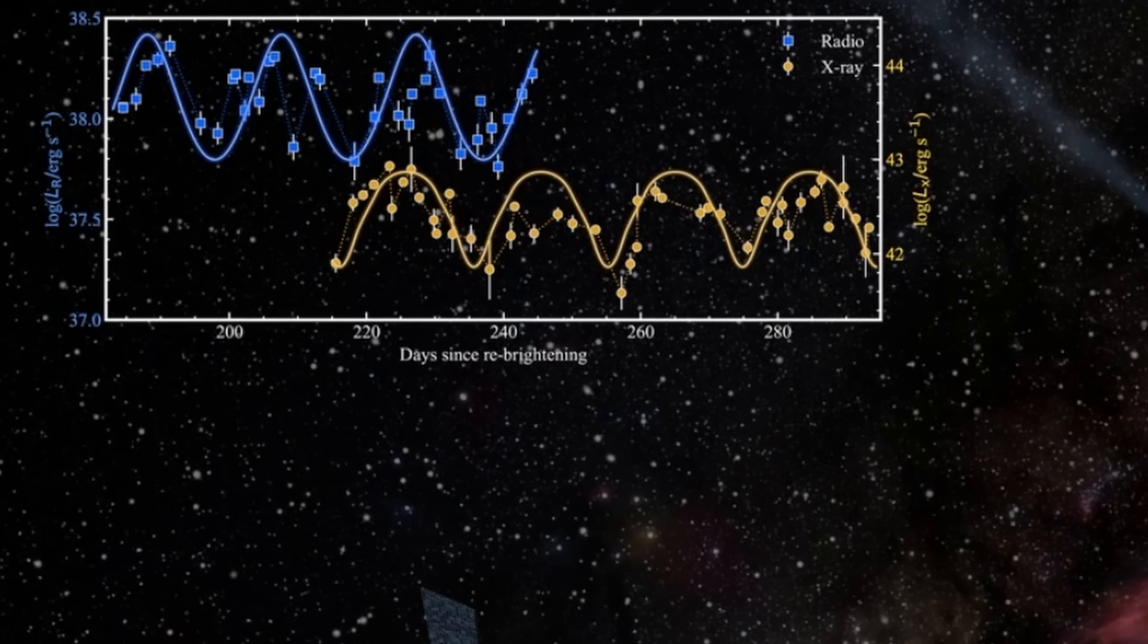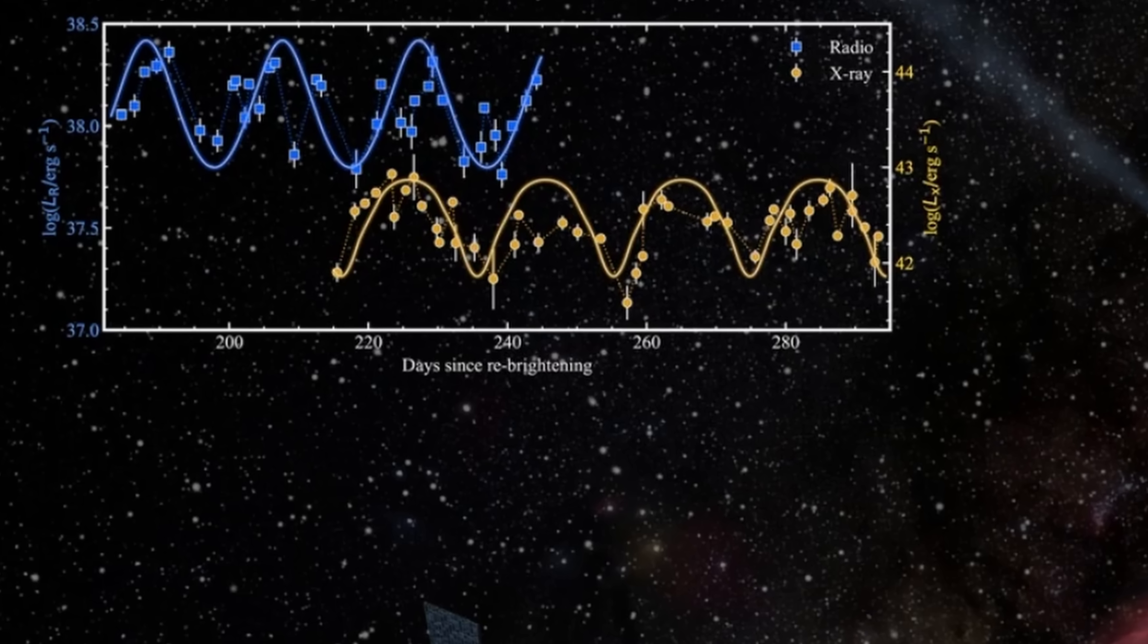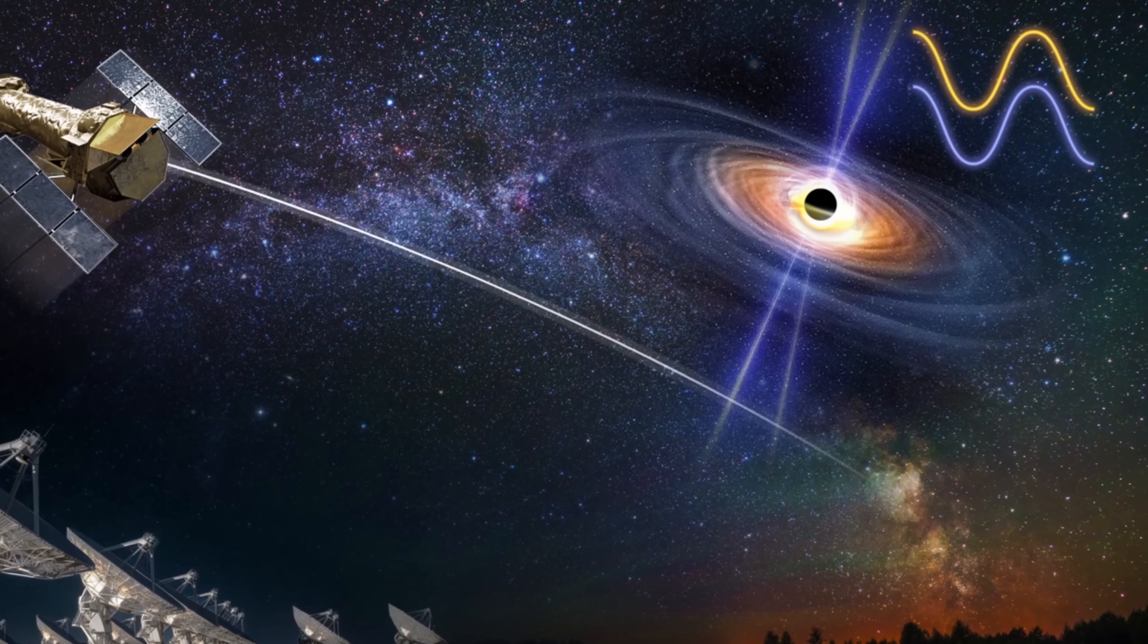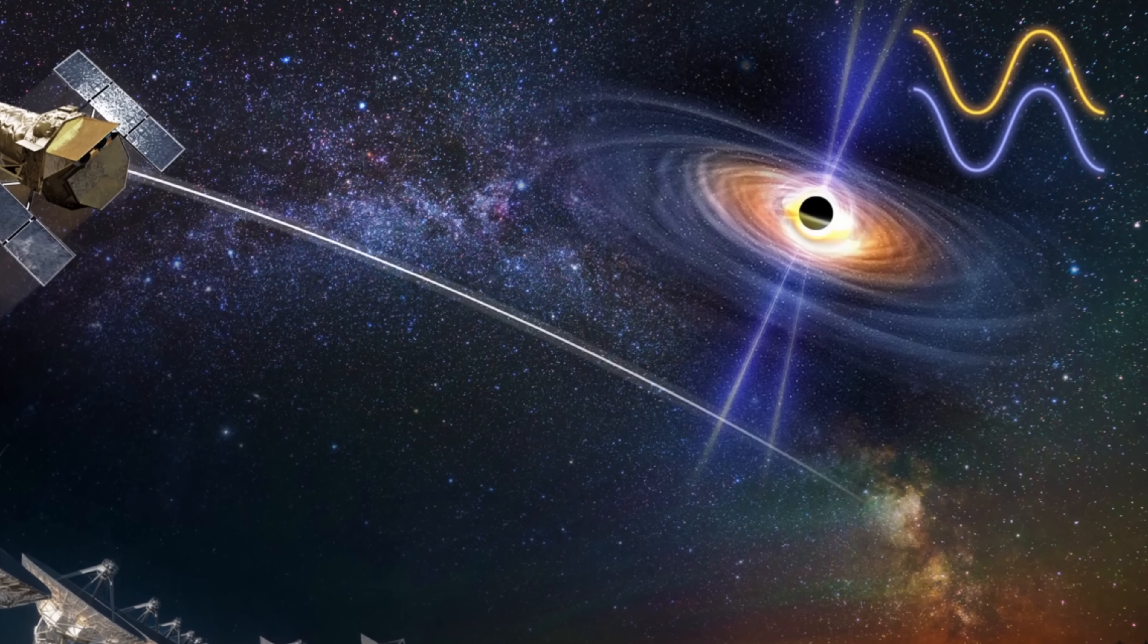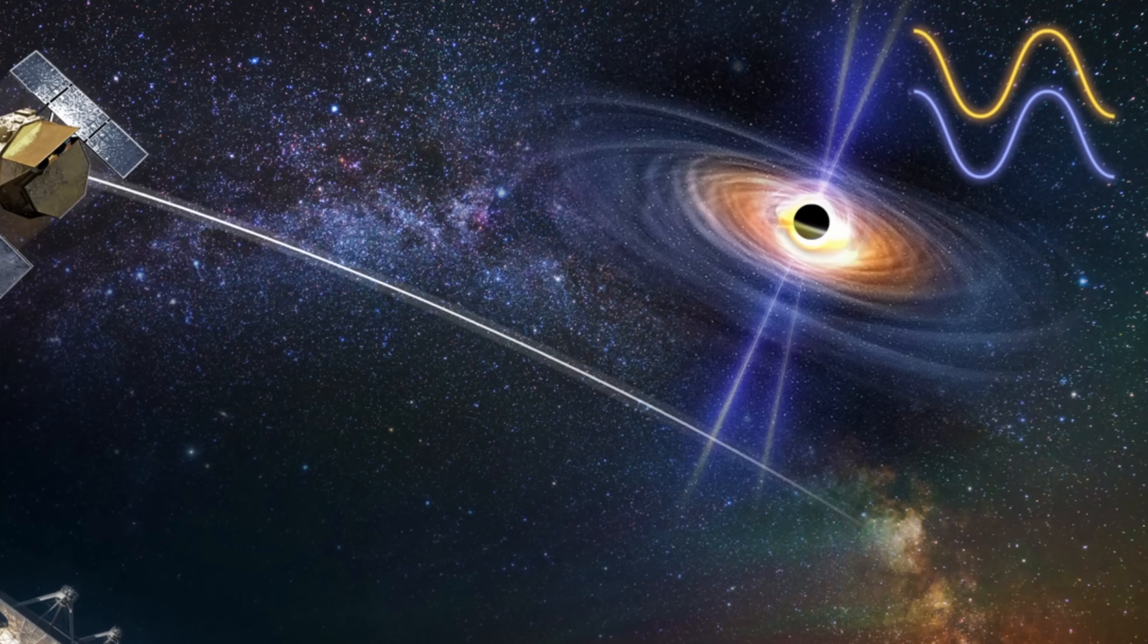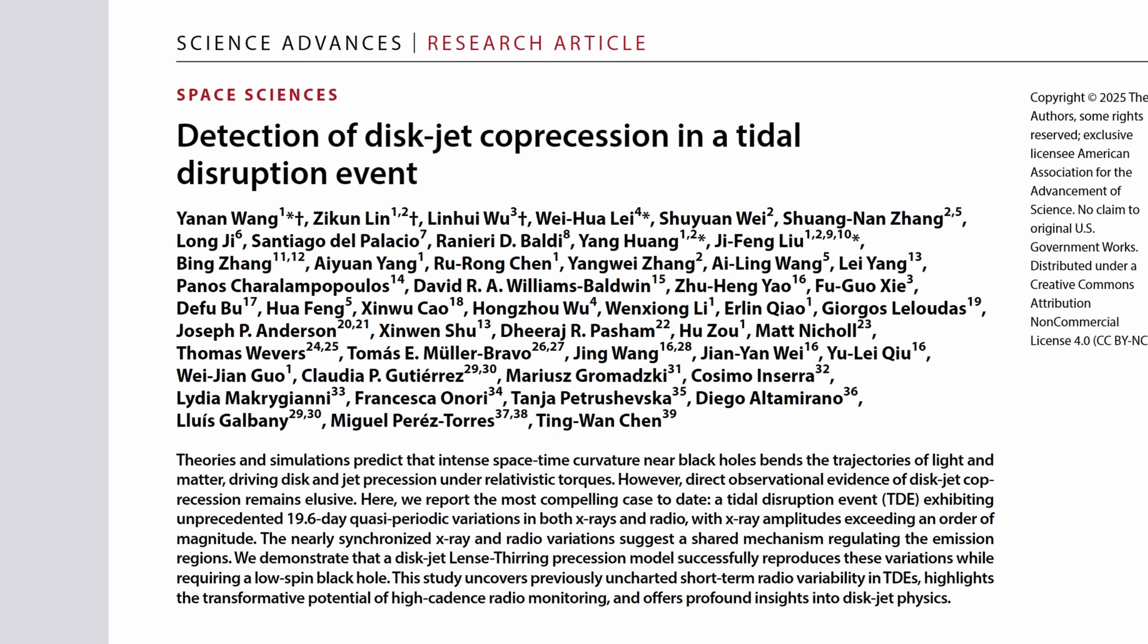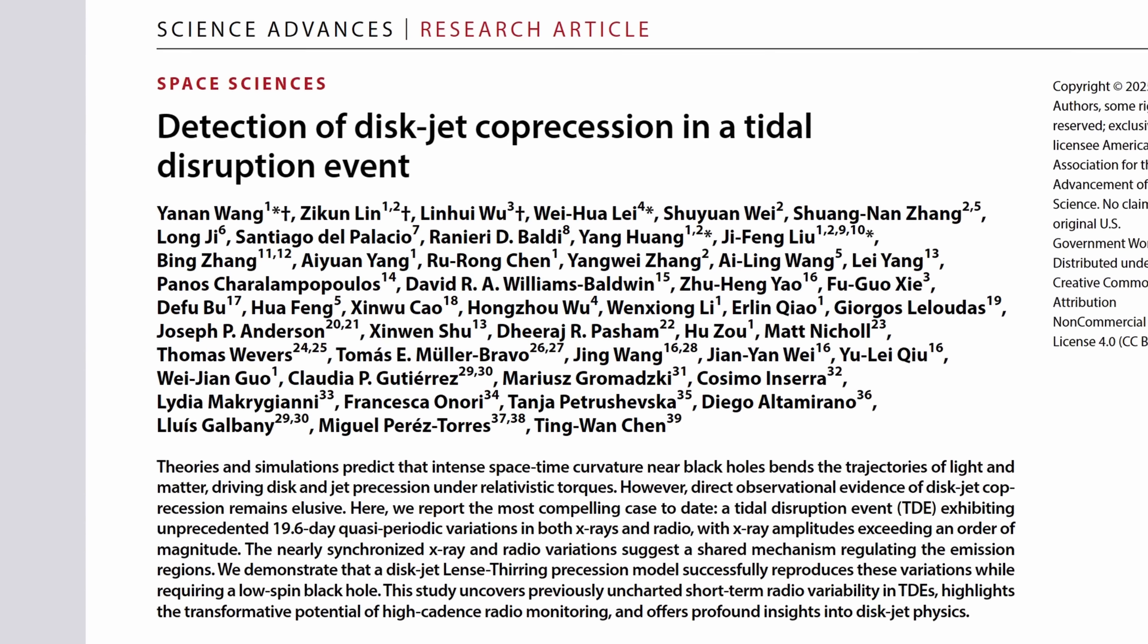But what made this event so different was the unusual rhythmic heartbeat in the data. Basically, here, the emissions from the black hole created a kind of a sinusoidal pattern, with all this eventually reported and described in a study you can find in the description.